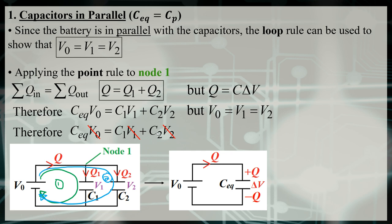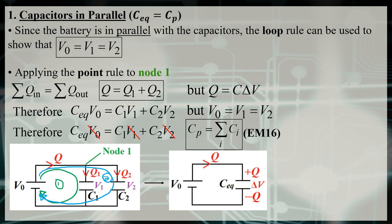Notice that the summation format — C1 + C2 — is associated with capacitors in parallel, not series. The formula sheet gives CP = ΣCi, where i is the number of capacitors in parallel. So for capacitors in parallel, simply add the capacitance values together to get the equivalent capacitance. This is the simpler of the two derivations.